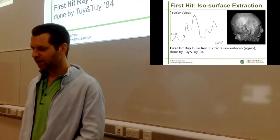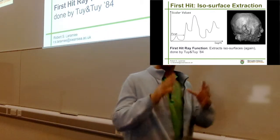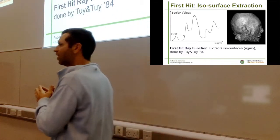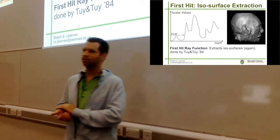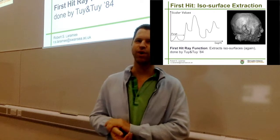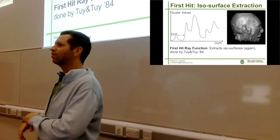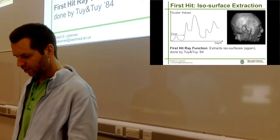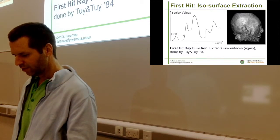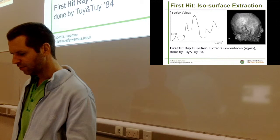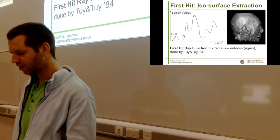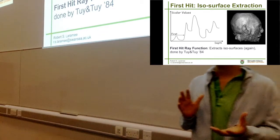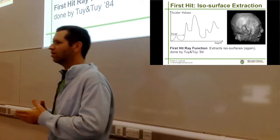Here are some examples for a medical data set - a scan of somebody's head. In this case the values that correspond to air are ignored, just skipped. We used a first hit ray function to return the first value we see in the volume when we cast our rays, which in this example is the skin - the outer layer of the cadaver. It's the first thing the ray hits in the 3D volume.